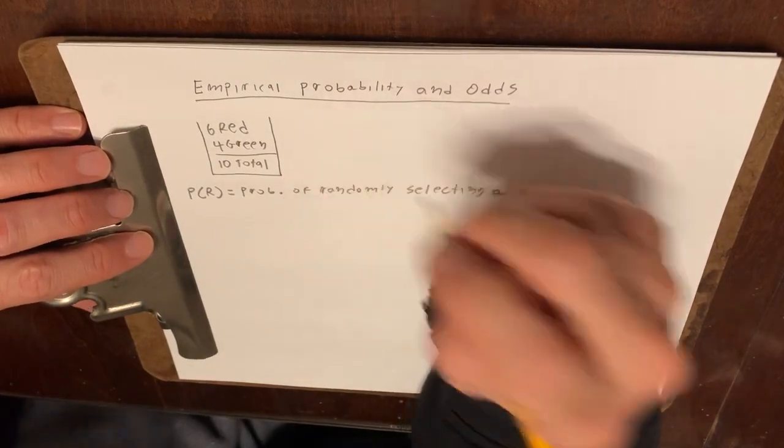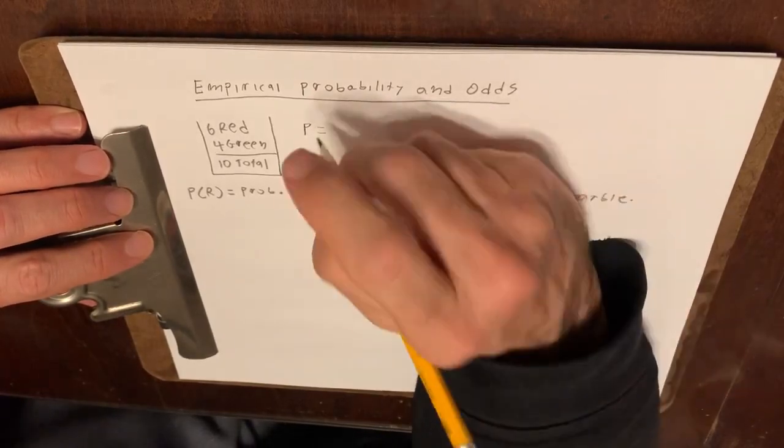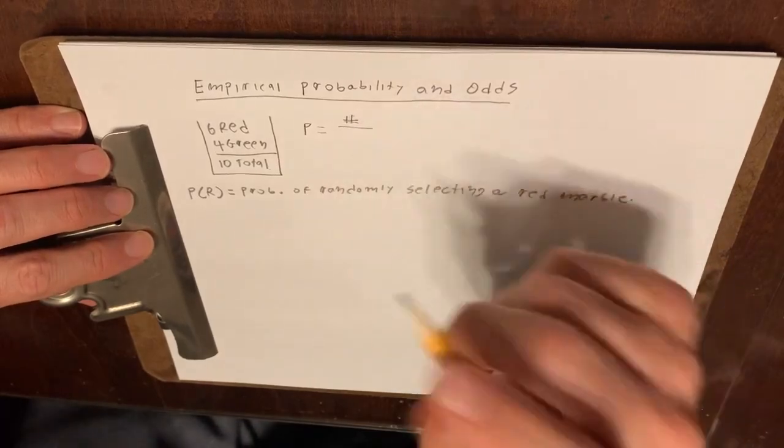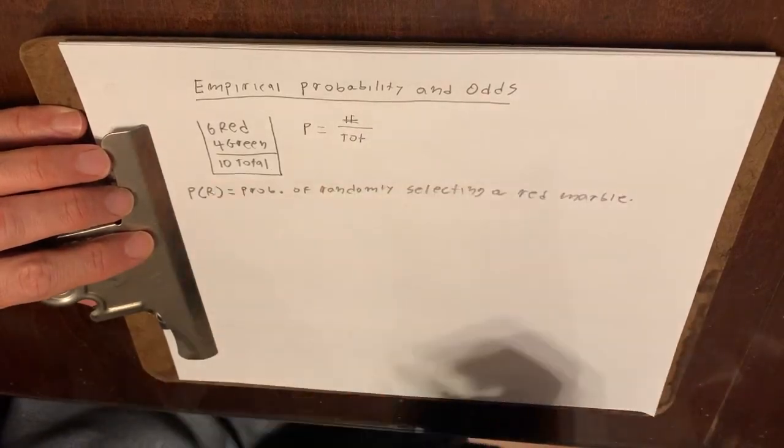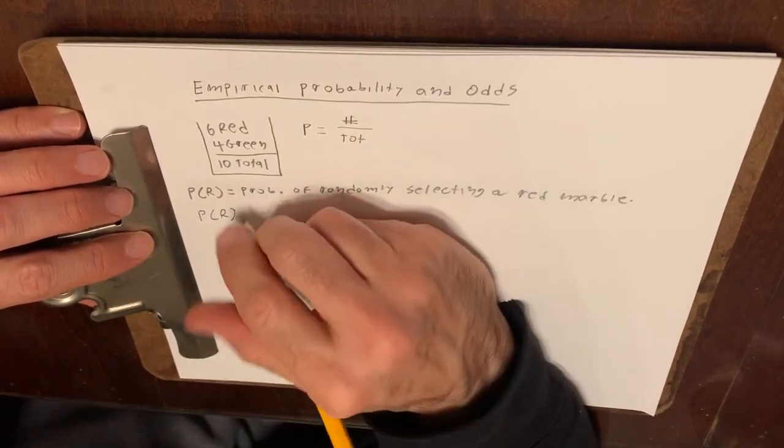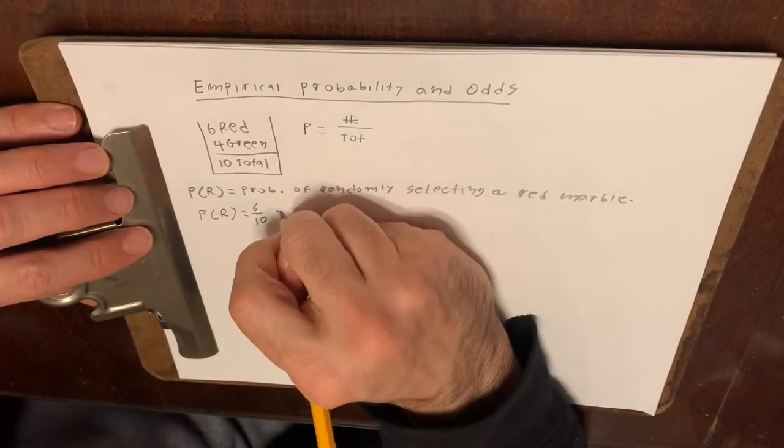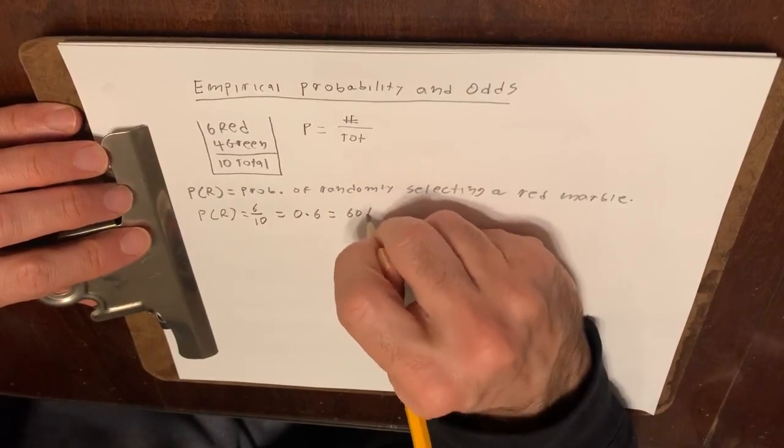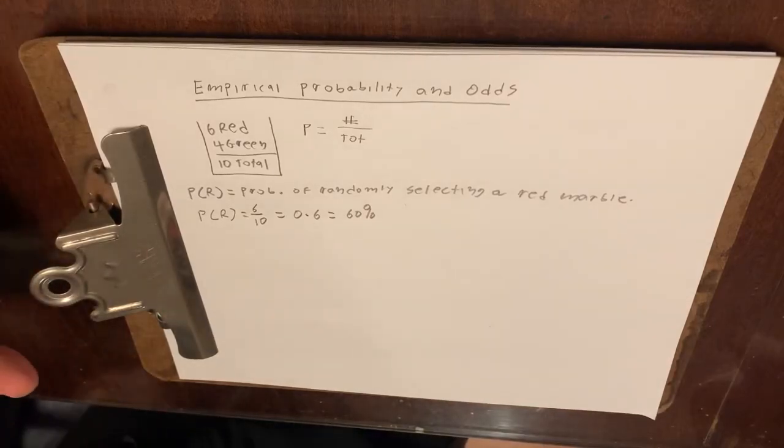So in general, for this empirical probability, you should see that probability is equal to the number, which happens to be six, over the total, which is ten. So the probability of randomly selecting a red marble is six out of ten. And you can write this as 0.6 if you like, or 60 percent. Whatever the instructions say is perfectly fine.